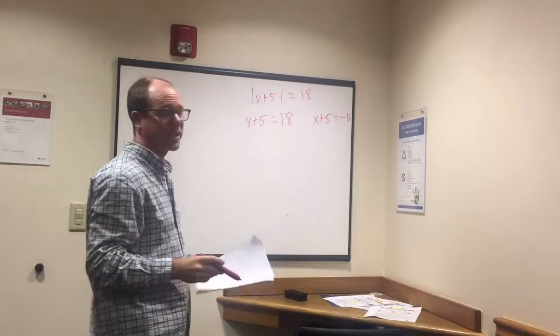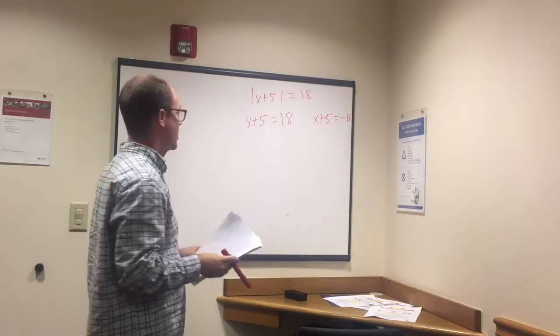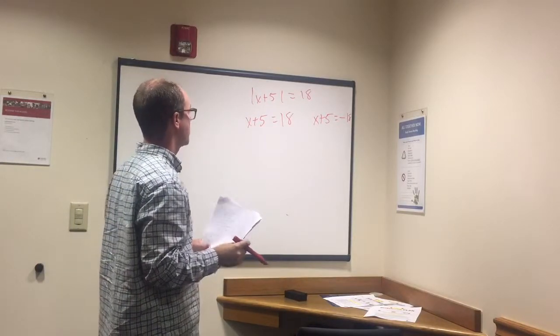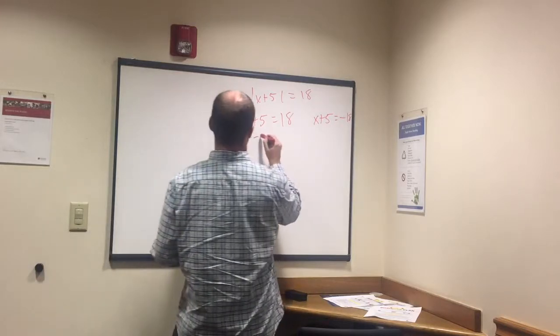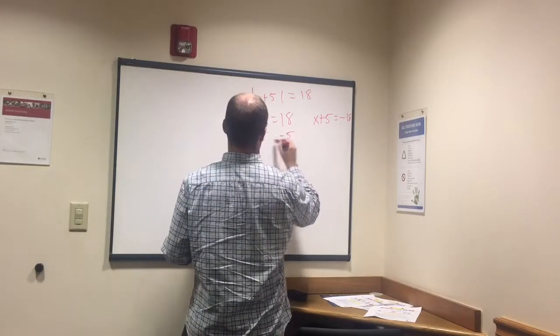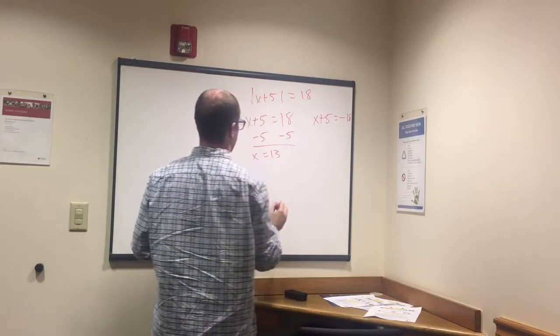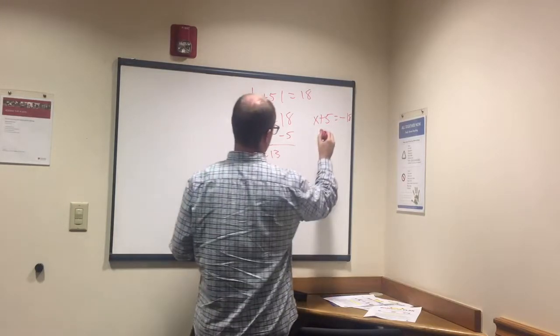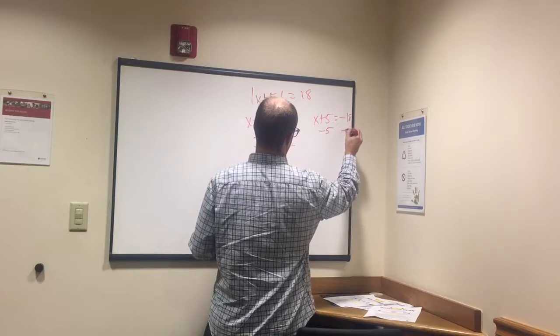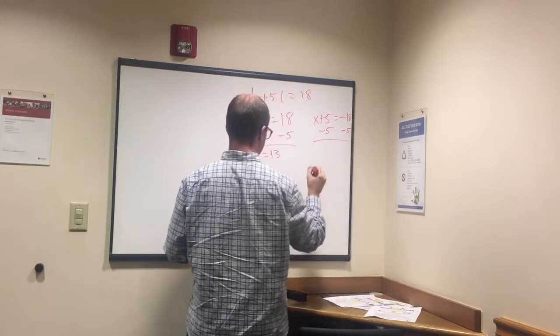One positive, one negative, because there's going to be a range in our answers for absolute value. Then we just solve each of them. Subtract each side by 5, x equals 13. Subtract 5, remember that negative 18 minus 5 is negative 23.